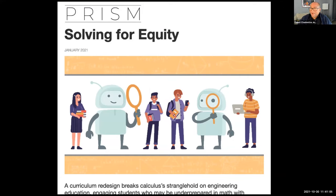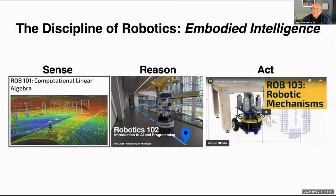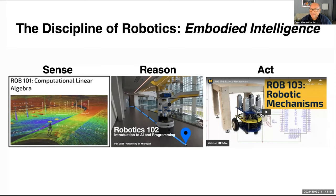We're trying to introduce ideas that could address these problems and make our academic environment better for everybody. These are ideas we've been exploring in Michigan Robotics to solve for equity, as described in an ASEE PRISM article. The main idea is that coding is believing: math makes sense when you put it into code, put it into action, and see the result. We're trying to do this in the context of defining the discipline of robotics through the lens of embodied intelligence, coming up with first-year introductory classes that give students access to how they can use artificial intelligence for sensing, reasoning, and acting. These courses already exist — I'm teaching Robotics 102 right now, focusing on autonomous navigation as graphs and graph algorithms.